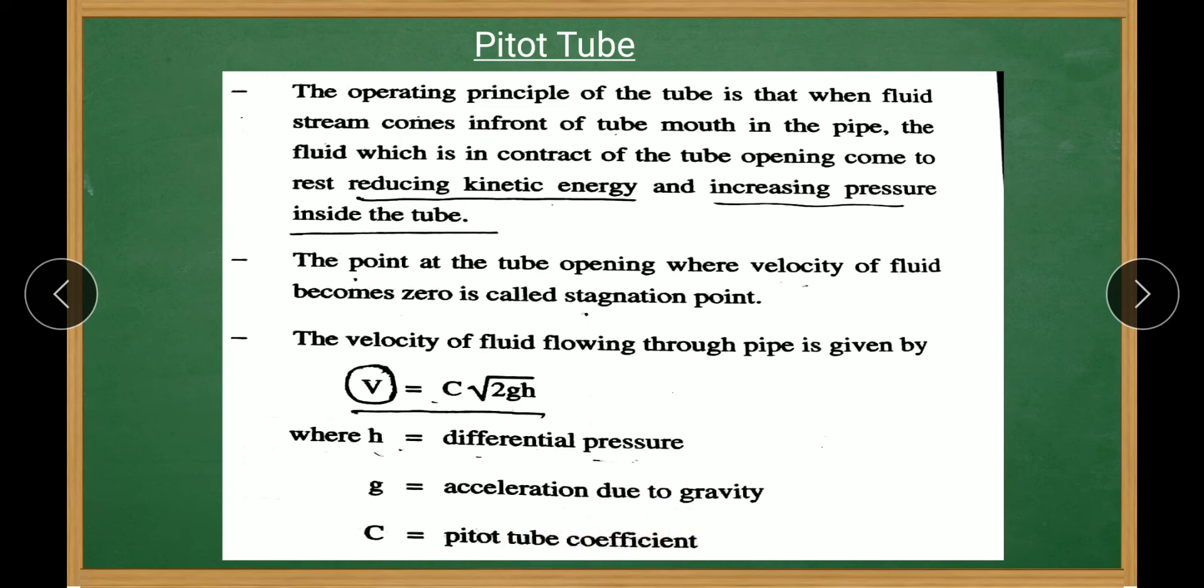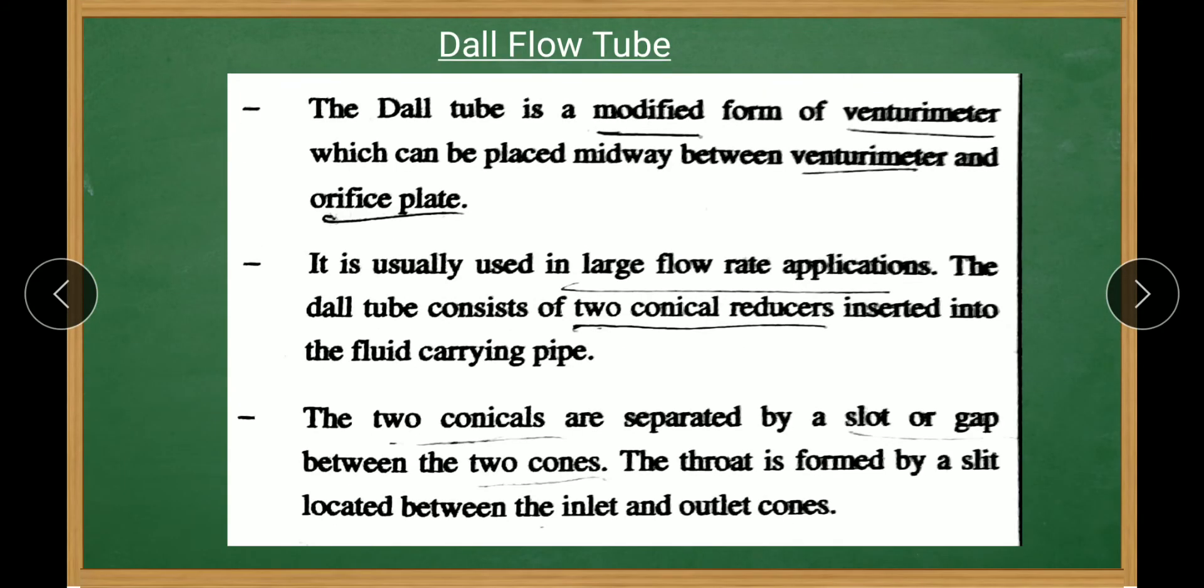The velocity of fluid is expressed as v = c√(2gh), where h is the differential pressure, g is acceleration due to gravity, and c is the pitot tube coefficient. So this is the pitot tube.